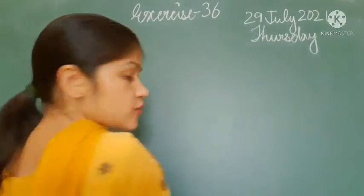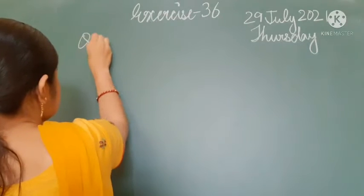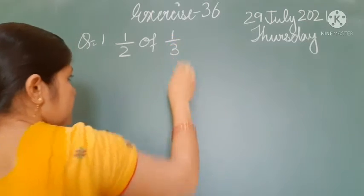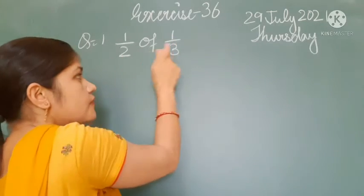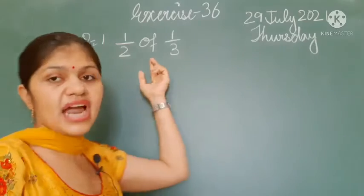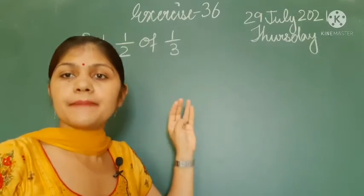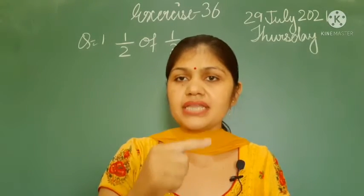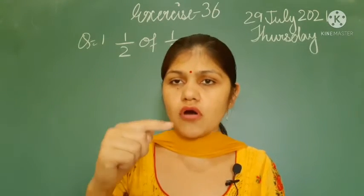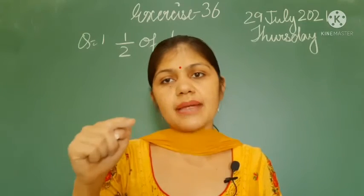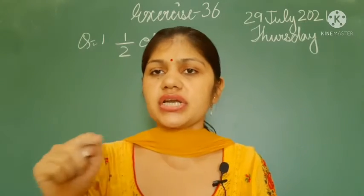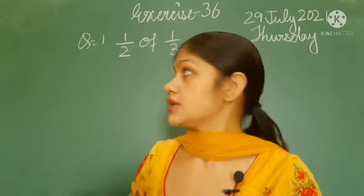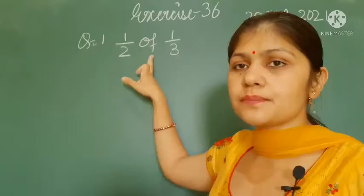Exercise 36, question number 1: 1 by 2 of 1 by 3 — fraction of fraction. We know that the meaning of 'of' is multiplication. We have done this in chapter 5, BODMAS rule: B means bracket, O stands for 'of', D division, M multiplication, A addition, S subtraction. So 'of' means multiplication.